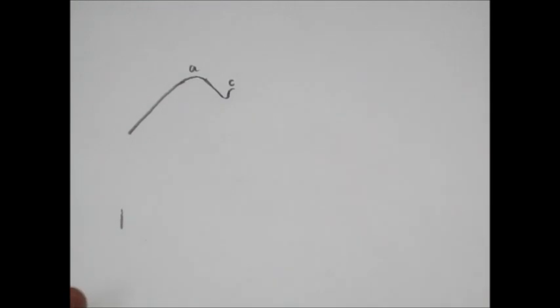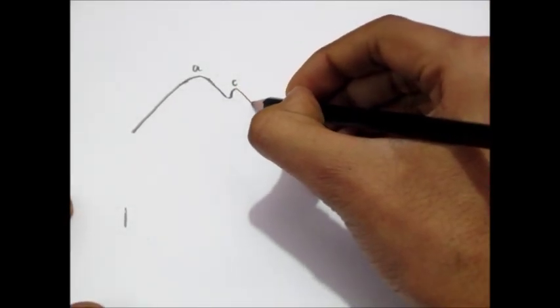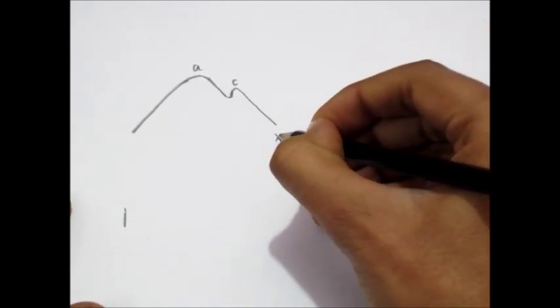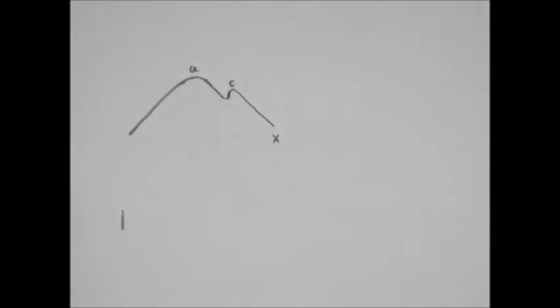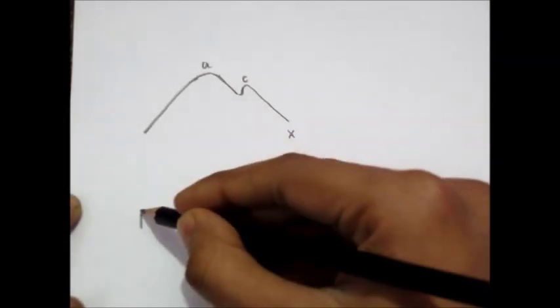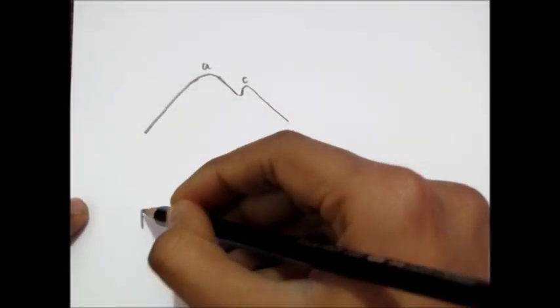Then comes the X wave — this is the first negative wave or first dip in jugular venous pulsation. This occurs because as the ventricle contracts, it pulls the fibrocartilaginous ring to which the tricuspid valve is attached slightly downwards.